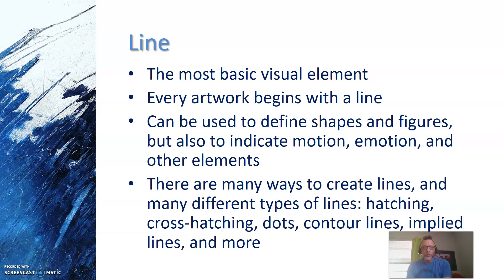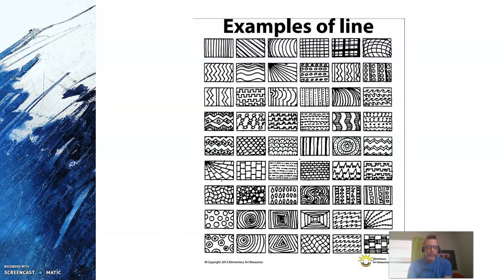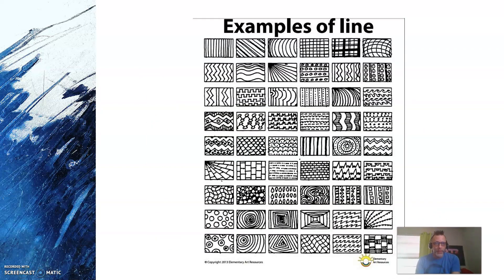There are many ways to create lines and many different types of lines, such as hatching, cross-hatching, dots, contour lines, implied lines, and many more. Here are just a few examples of different types of lines. You can see that an artwork can be created from any one of these types of lines.